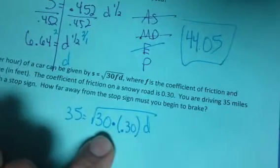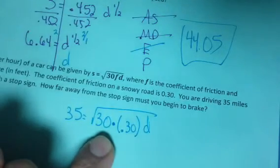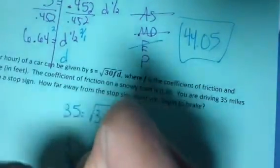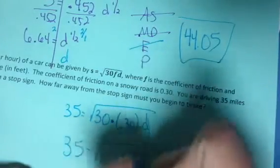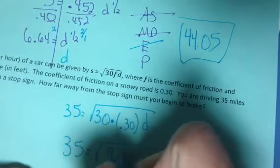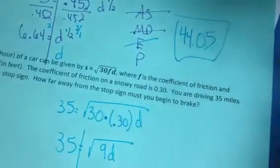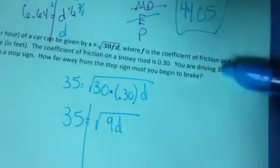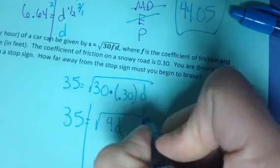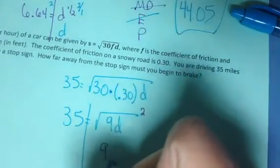First I'm going to take 30 times 0.3. That gives me 9D, and I have to solve for D. The radical has been isolated. I'm going to get rid of the square root by squaring this side, which gives me 9D.